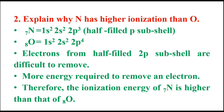Electrons from a half-filled 2p subshell are difficult to remove. More energy is required to remove an electron. Therefore, the ionization energy of 7N is higher than that of 8O.